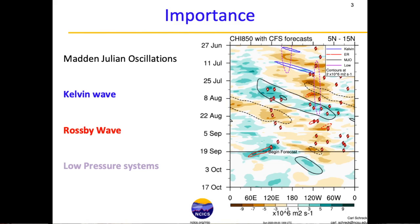It helps in highlighting the role of waves. As we know, waves have a very important role to play in atmospheric dynamics, where they transfer energy from one place to another. As the waves move in the longitudinal direction, they transfer energy from one basin to another, which is very important for the formation of systems like a low pressure system, a cyclone, or any depression. Hence, the Hovmöller chart is very important to find out how these waves are moving around the globe and what is the frequency of these waves.